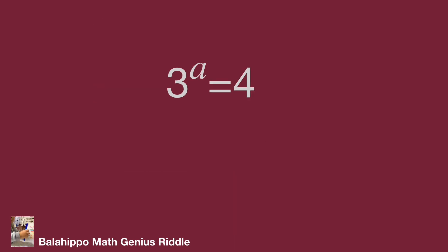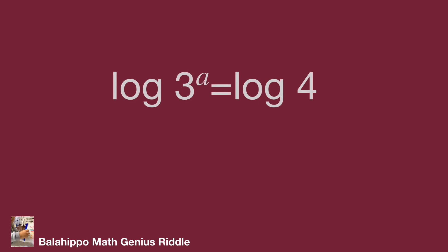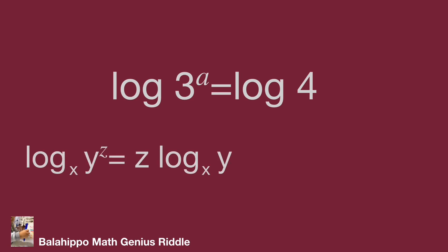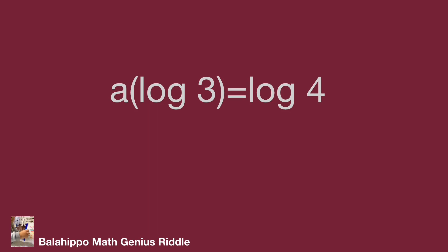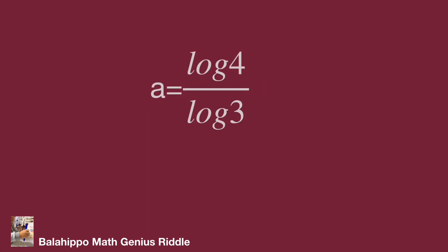Given 3 power a equals 4, the first method uses logarithms to find a. Apply log to both sides: log of 3 power a equals log 4. Using the logarithm rule — log of y power z to base x equals z times log of y to base x — we get a times log 3 equals log 4, therefore a equals log 4 over log 3.